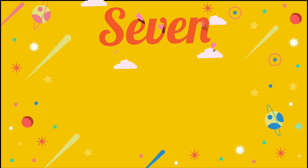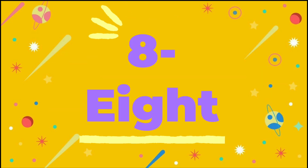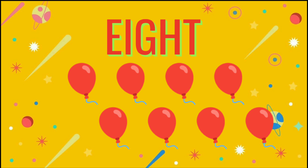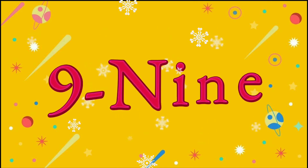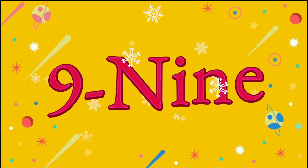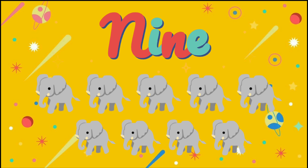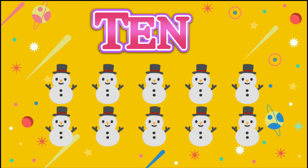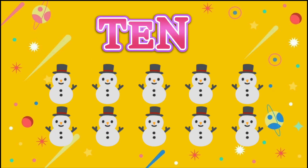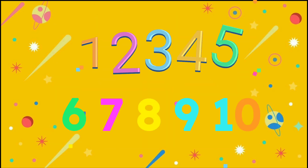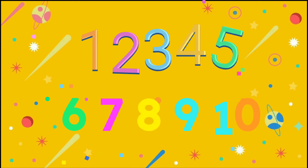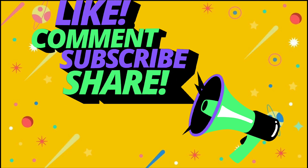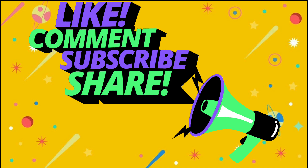S-E-V-E-N. 7. 7 candies. E-I-G-H-T. 8. 8 balloons. N-I-N-E. 9. 9 elephants. T-E-N. 10. 10 snowmans. 1-2-3-4-5-6-7-8-9-10. Hope you like the video.